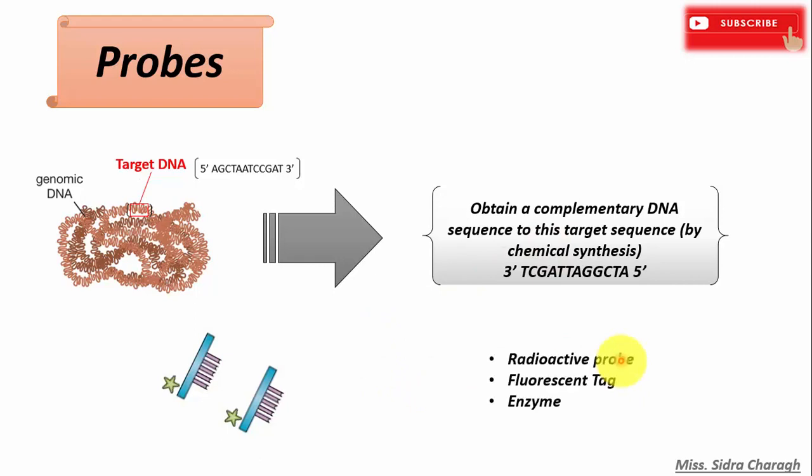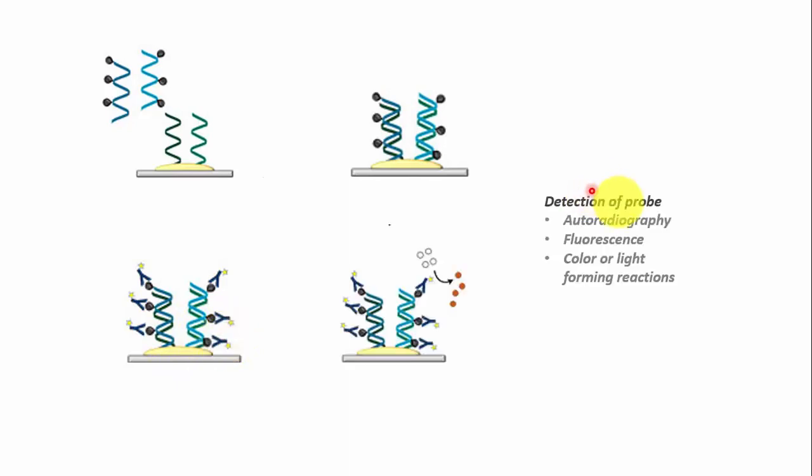Now the label can be a radioactive probe, a fluorescent tag, or it can be any enzyme. So when this labeled probe is added to the sample containing the target sequence, it will bind to it because of the complementary base pairing, and once it's bound, we can detect the probe by visualizing or detecting the label.